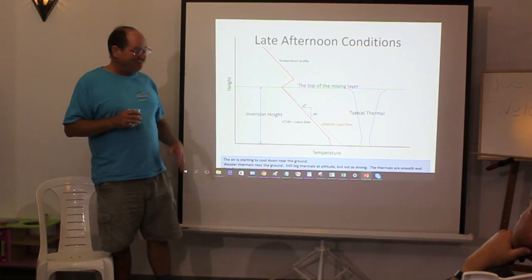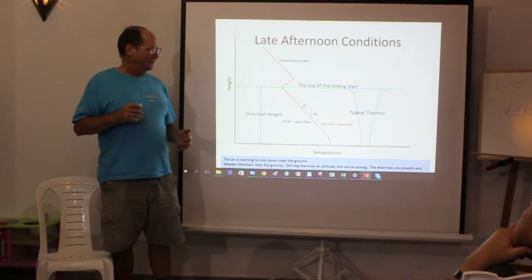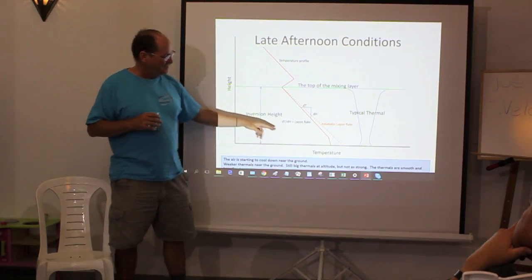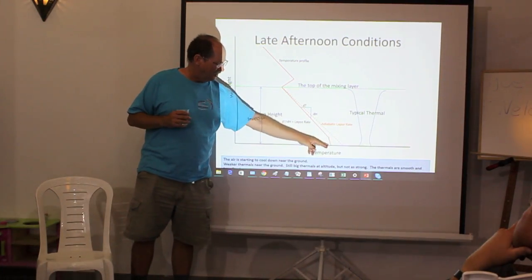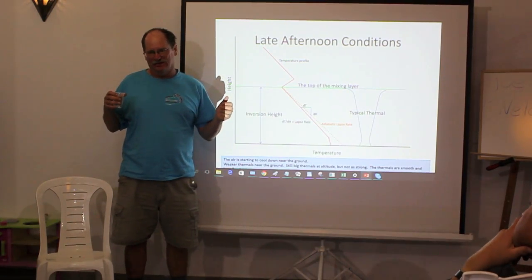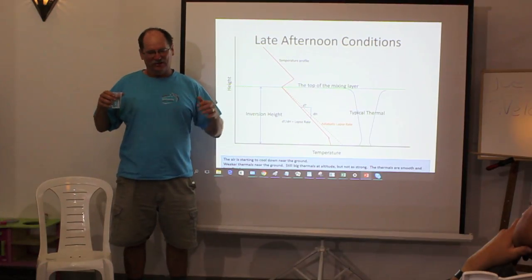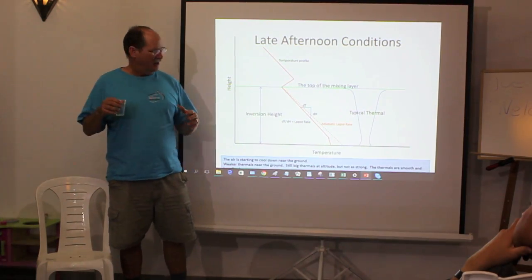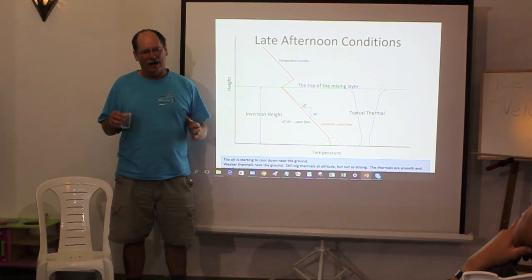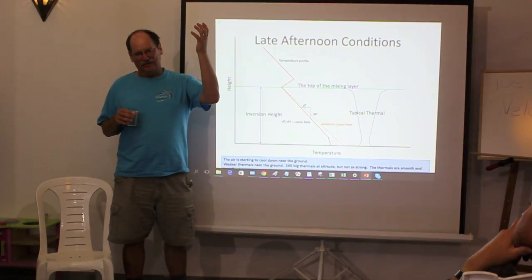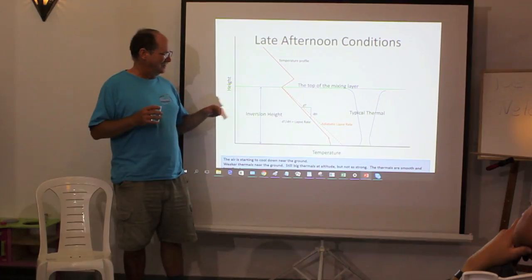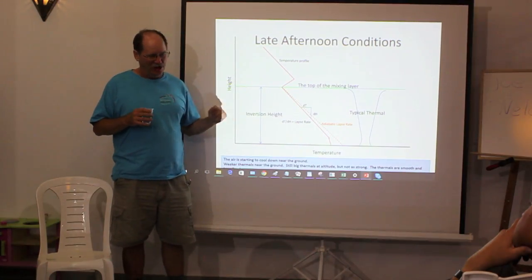And then later on in the day, late afternoon, the sun is beginning to drop down a little bit. You get to where it's beginning to cool down near the ground and you get big diffuse thermals. The air has been quite organized all day. Big thermal cycles, but they're beginning to lose energy. And the lift actually near the ground starts dying off, even though at higher altitudes the thermals are still quite good. As it gets to the late afternoon, don't get low.